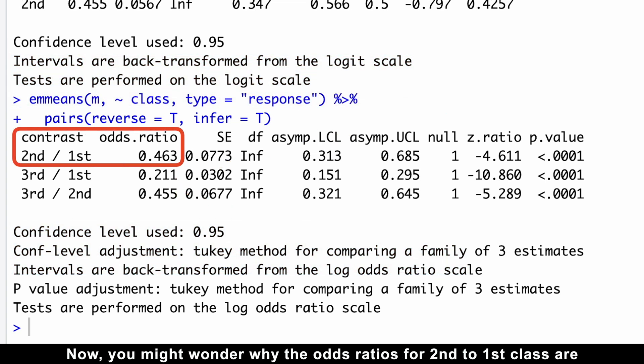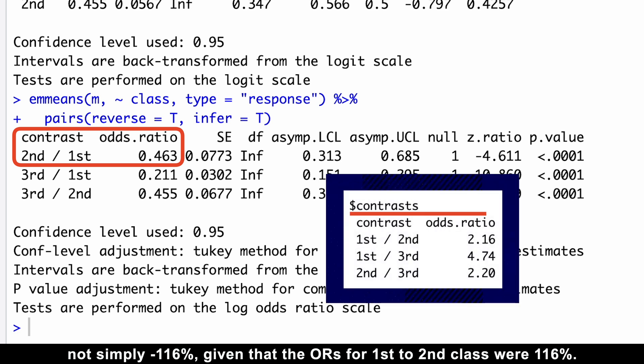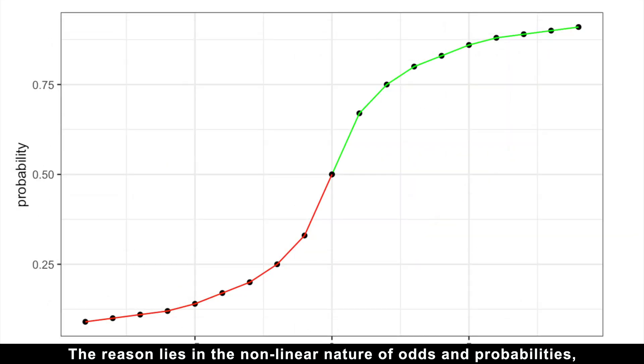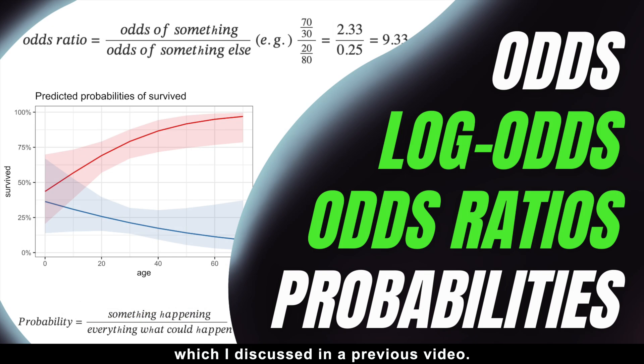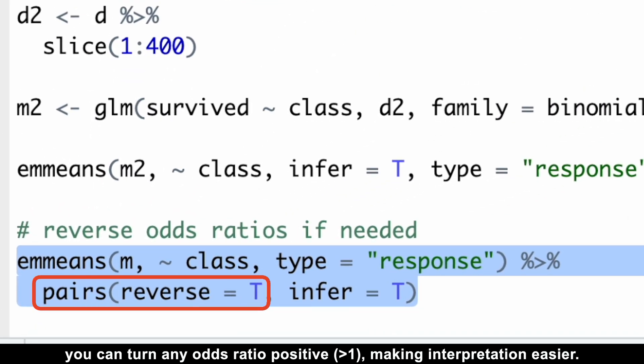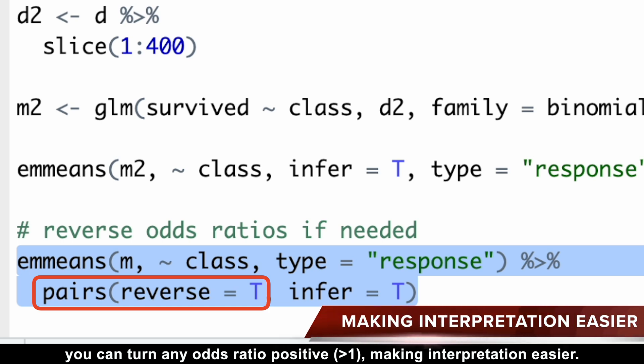Now, you might wonder why the odds ratios for 2nd to 1st class are not simply minus 116%, given that the odds ratios for 1st to 2nd class were 116%. The reason lies in the non-linear nature of odds and probabilities, which I discussed in a previous video. If you are curious, feel free to check it out. In any case, by using pairs reverse true, you can turn any odds ratio positive, making interpretation easier.